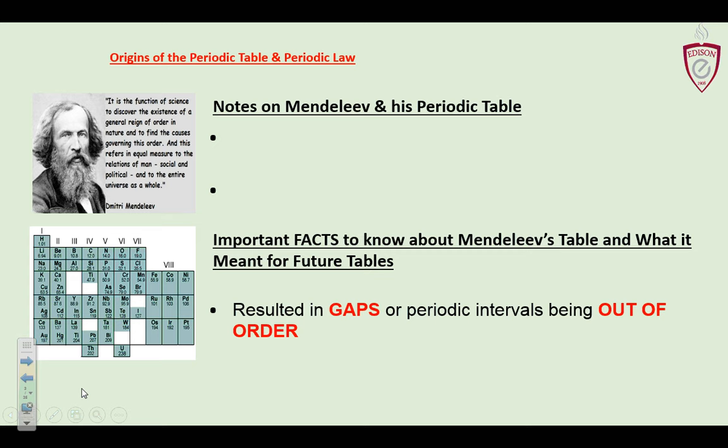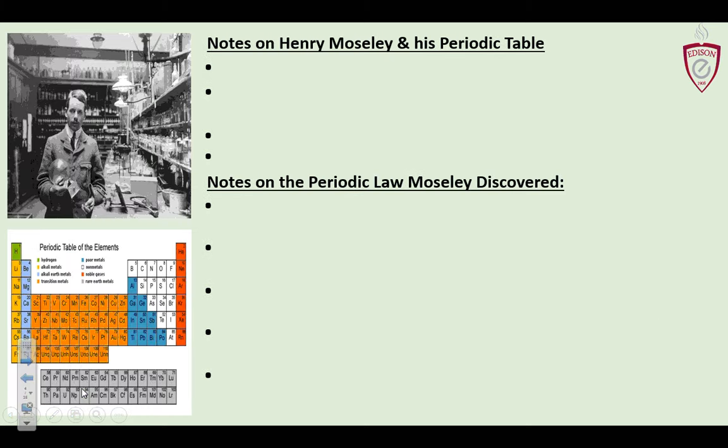If you look at the third or fourth row down, potassium and calcium — their weight difference isn't that big, but there's a big gap between calcium and titanium. So he figured something belongs there; he just didn't know what it was yet. That was his claim to fame: he created the first usable periodic table.